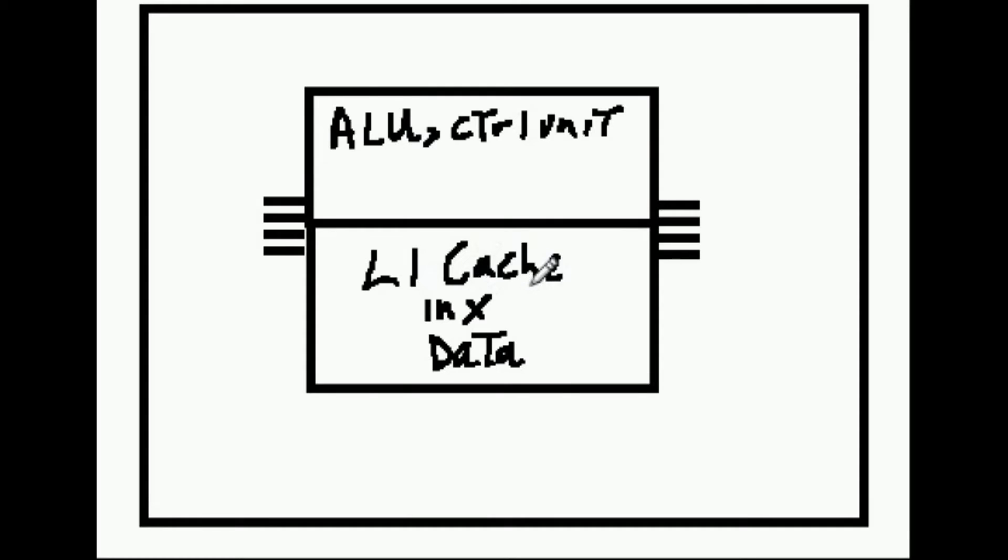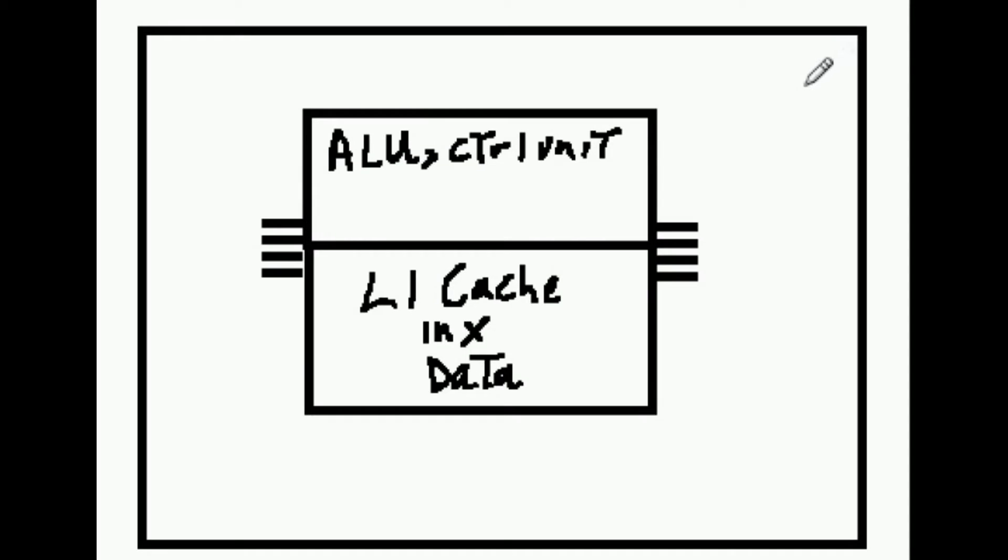No bus to travel across, just a direct connect, super fast. The next cache that we have is called L2 cache. It does have a bus which it traverses, and that of course is the internal bus.